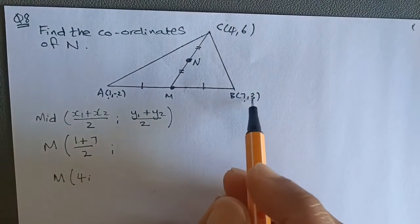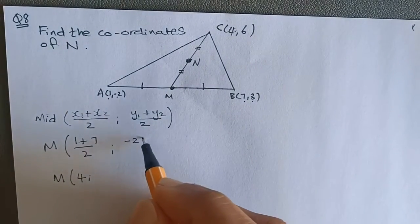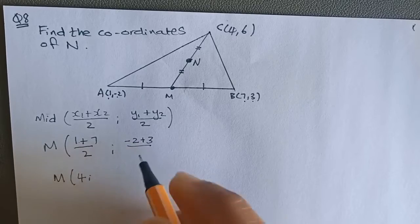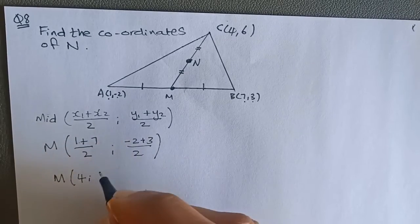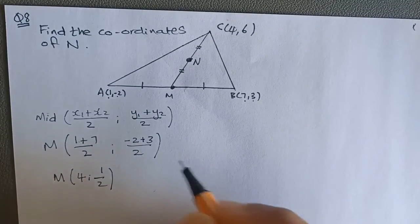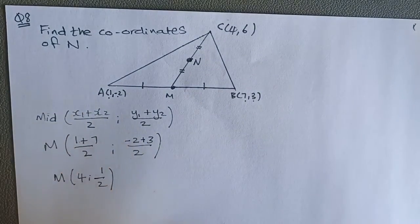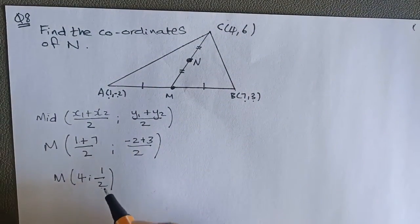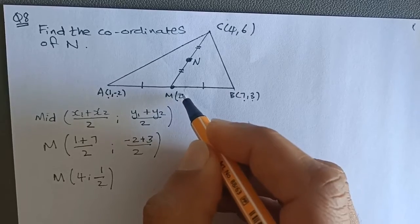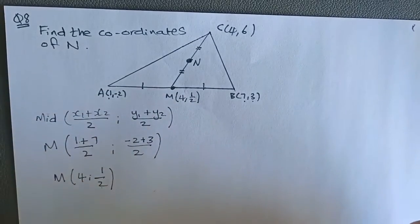We then take the y values, which is negative 2 and 3, divided by 2, and we end up with 1 over 2. Negative 2 plus 3 is 1, so 1 divided by 2 is a half. Therefore, this coordinate here will be 4 and a half for the y.